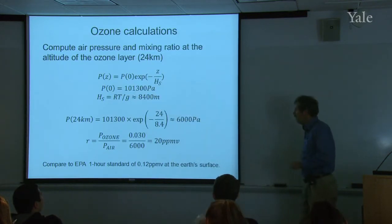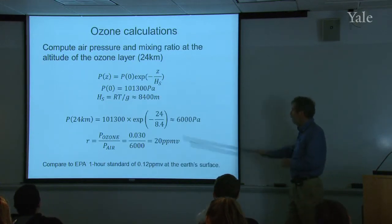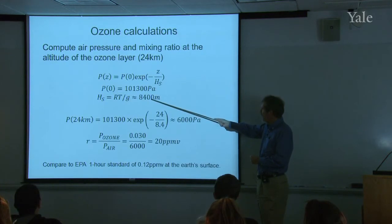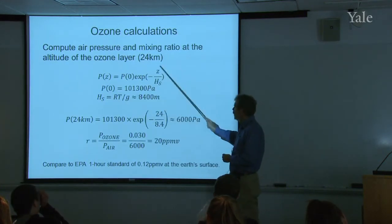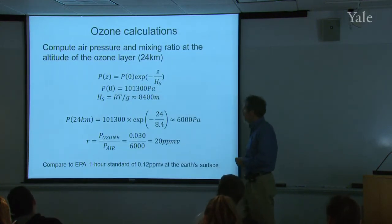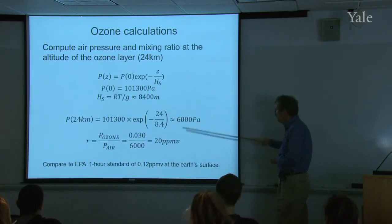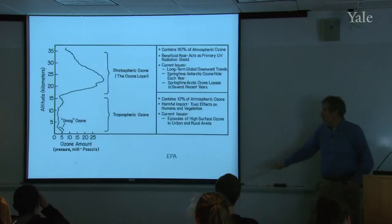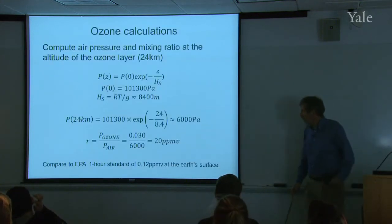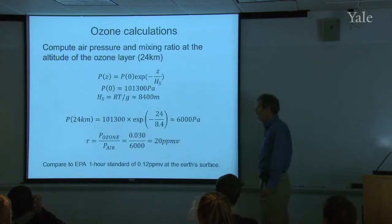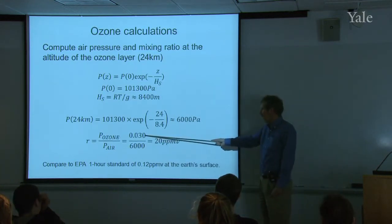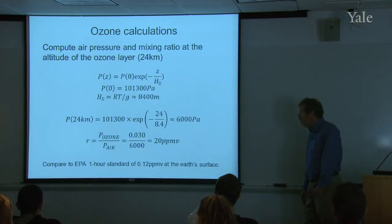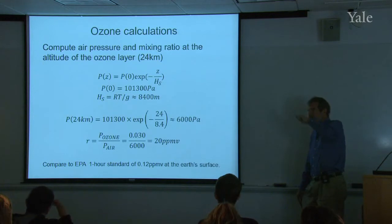Sea level pressure is 1,013 millibars — the standard average value — converted to pascals. The scale height, RT over g, is about 8,400 meters for Earth's atmosphere. Putting 24 kilometers and that scale height into the formula, I get a value of about 6,000 pascals for the air pressure there. Then I form the ratio: 0.03 pascals over 6,000 pascals, and I get 20 ppmv for the ozone mixing ratio at the peak of the ozone layer.